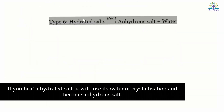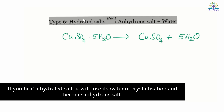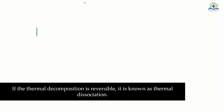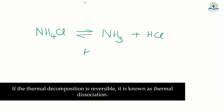If you heat a hydrated salt, it will lose its water of crystallization and become an anhydrous salt. If the thermal decomposition is reversible, it is known as thermal dissociation. For example, ammonium chloride decomposes to ammonia and hydrogen chloride by absorption of heat.